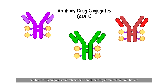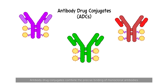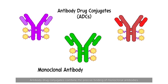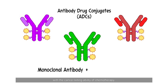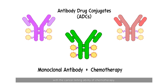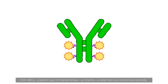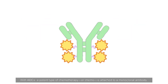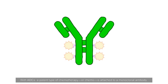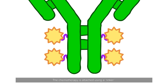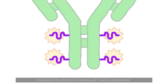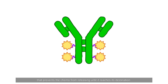Antibody Drug Conjugates combine the precise binding of monoclonal antibodies with the cancer-killing ability of chemotherapy. With ADCs, a potent type of chemotherapy is attached to a monoclonal antibody that helps direct the chemo to the tumor cell. The chemotherapy is attached using a linker that prevents the chemo from releasing until it reaches its destination.